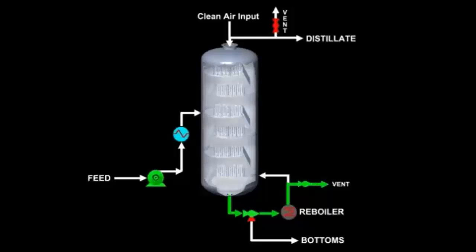In valve or bubble cap trays, the downcomers will serve as the primary conduits for the downward vapor flow.